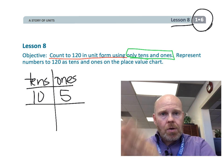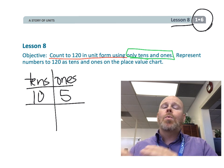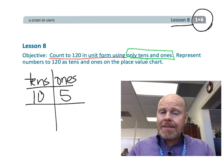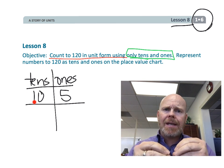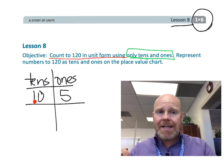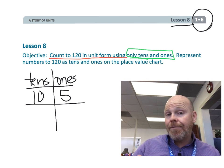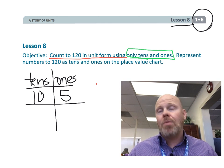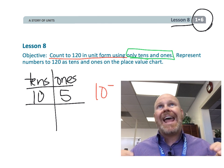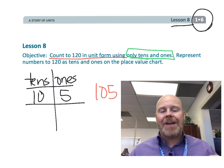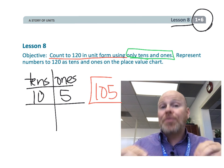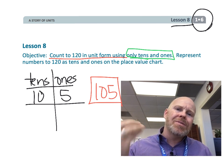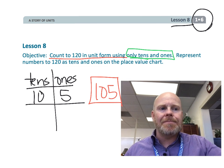We're going to stick to the 10 tens idea and call it 10 tens and 5, which would be 105. We shouldn't say 'and 5' — we should say 105. So that's what we're going to be doing, so let's get started.